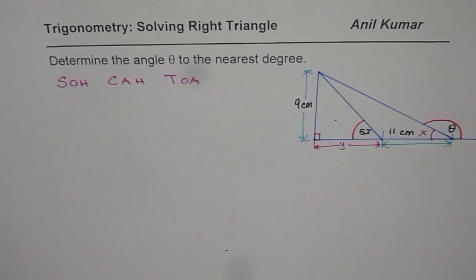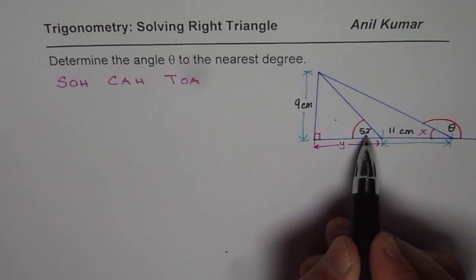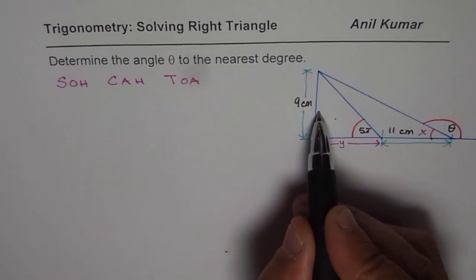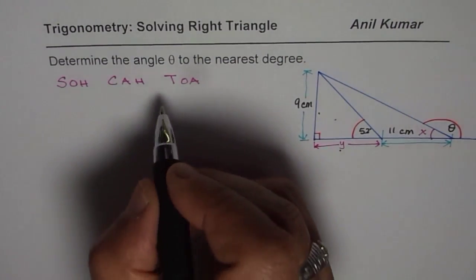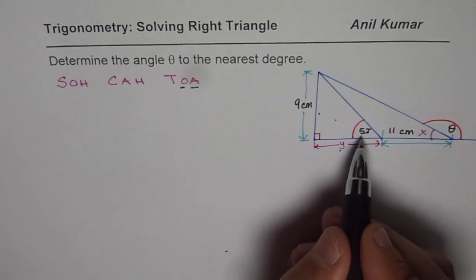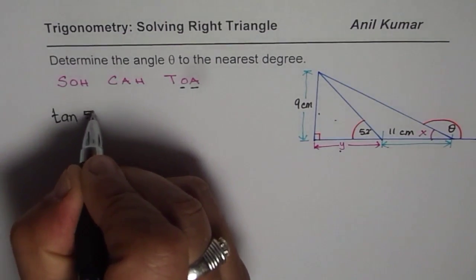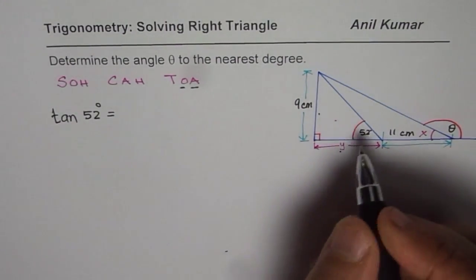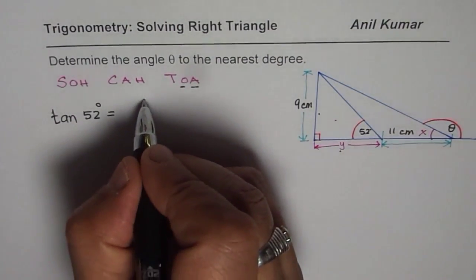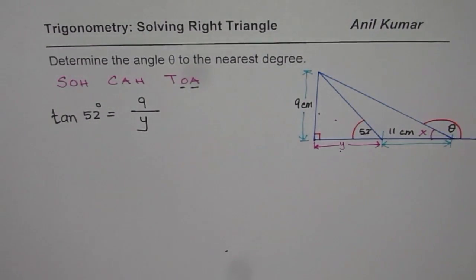So let us begin by looking at the very first triangle. We are given angle 52, side opposite and adjacent. So opposite and adjacent is given to us. We should use tan of the angle. So we can write this as tan of 52 degrees is equals to 9 centimeter over y. So 9 over y. We will use units at the end, while answering the question.